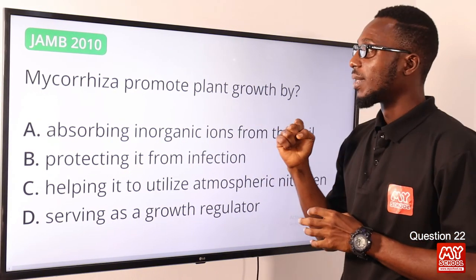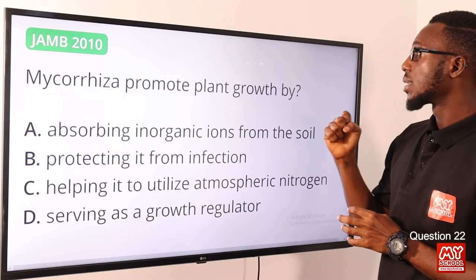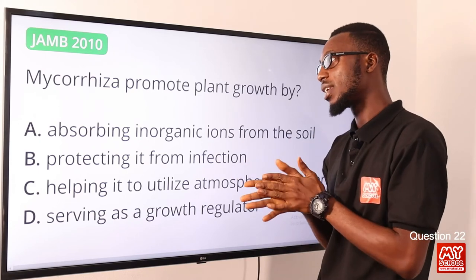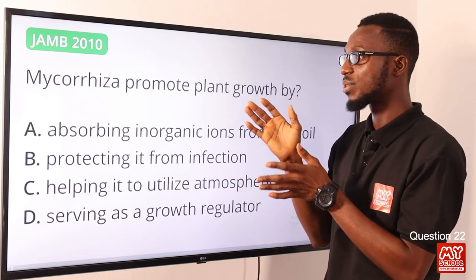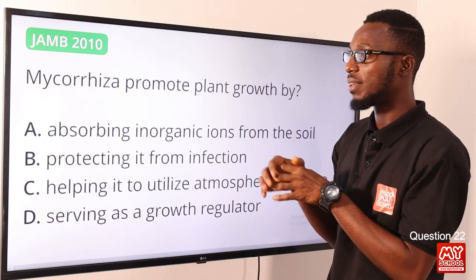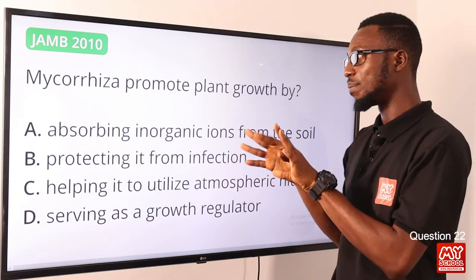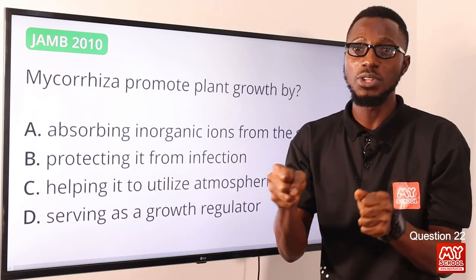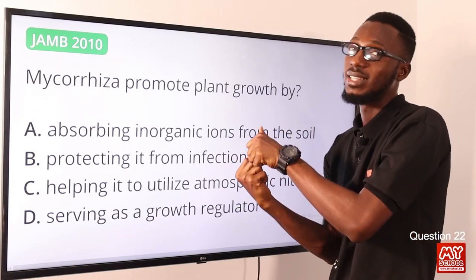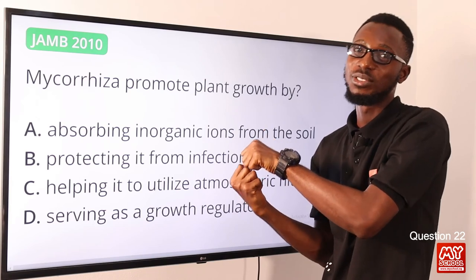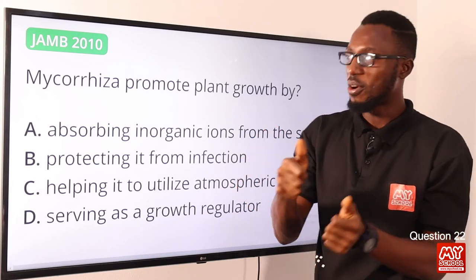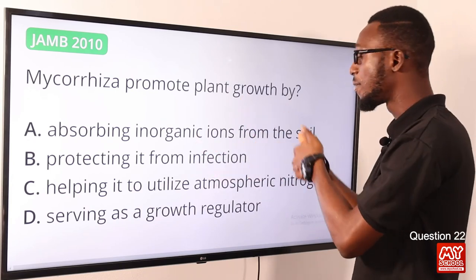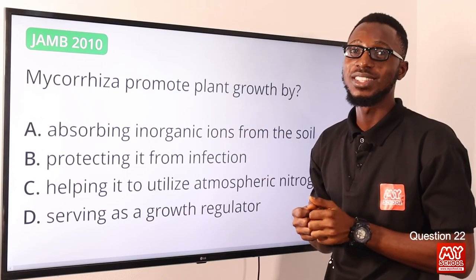Question 22: Mycorrhiza promotes plant growth by what? Mycorrhiza is a relationship between a fungus and plant roots. The fungus acts like the plant's root hairs, helping to absorb inorganic substances from the soil and transfer them to the plant. In turn, the plant supplies organic nutrients to the fungus. Mycorrhiza promotes plant growth by absorbing inorganic ions from the soil. Option A is the correct option.